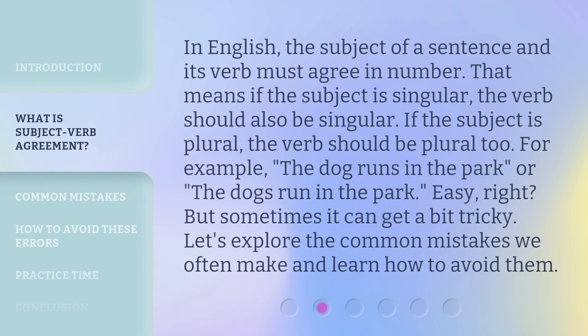In English, the subject of a sentence and its verb must agree in number. That means if the subject is singular, the verb should also be singular. If the subject is plural, the verb should be plural too. For example: 'The dog runs in the park,' or 'The dogs run in the park.' Easy, right?